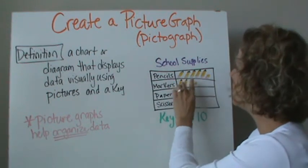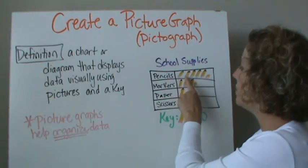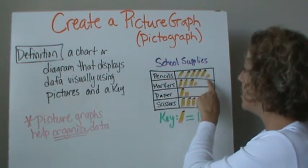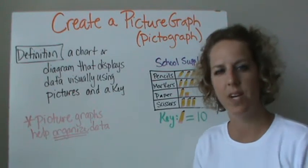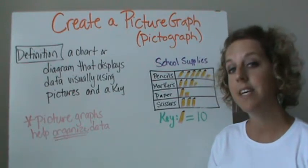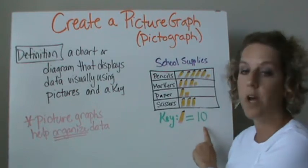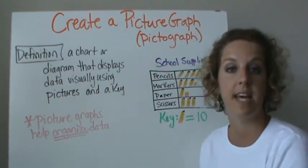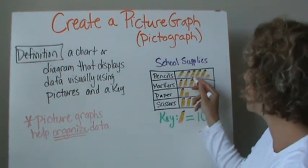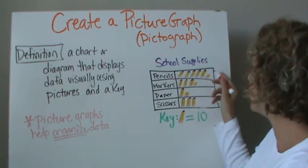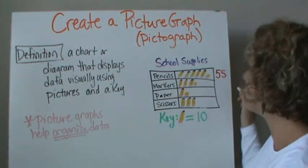Let's look here at the pencils. I have 10, 20, 30, 40, 50. But then I see a half of a pencil — kind of like a broken pencil. That's going to represent half of what the key says. We know that half of ten is five. So we have 10, 20, 30, 40, 50, and then a half, so we're going to say 55.